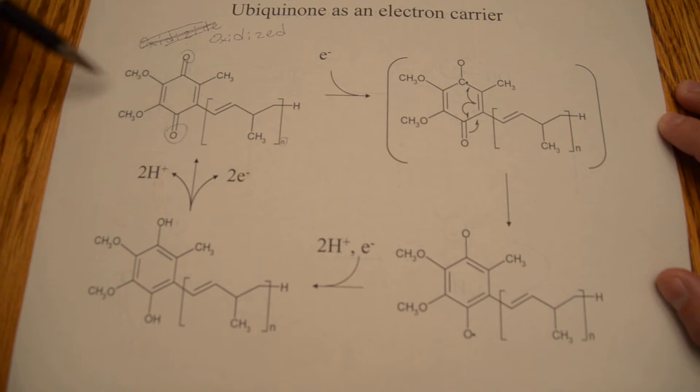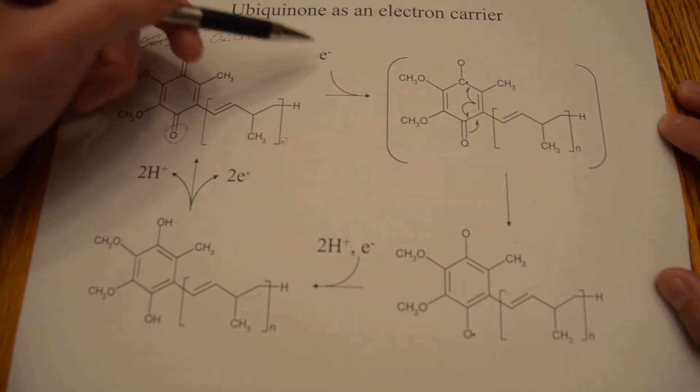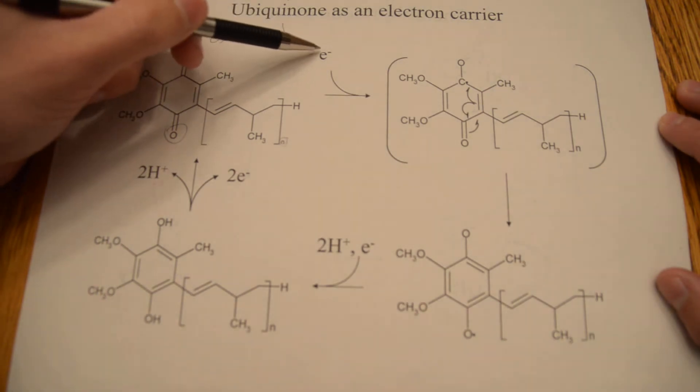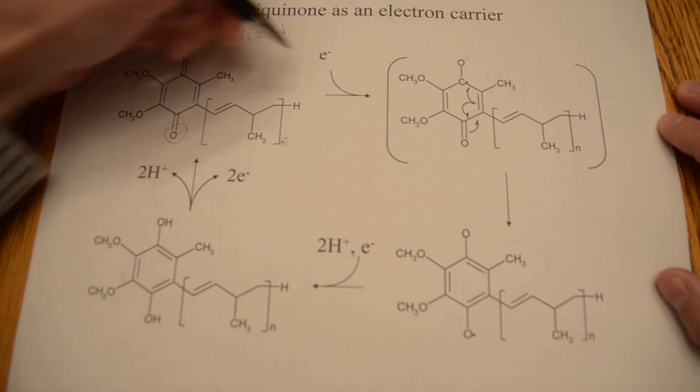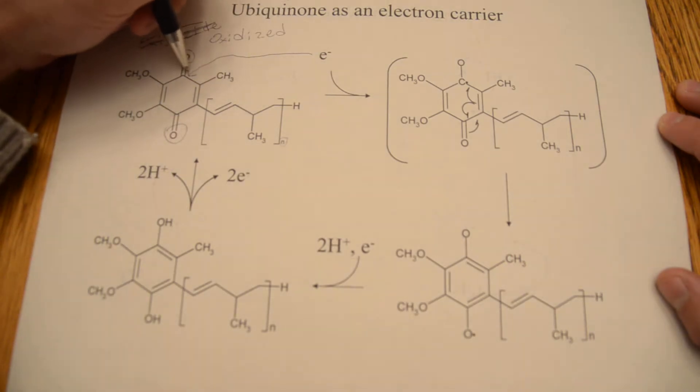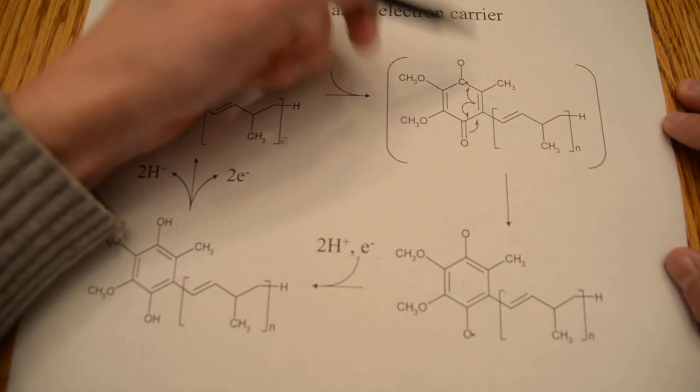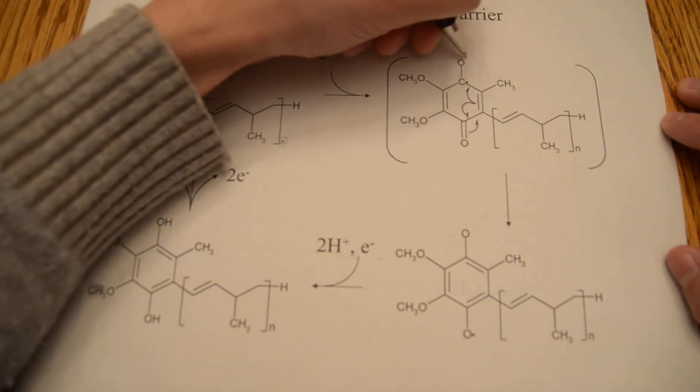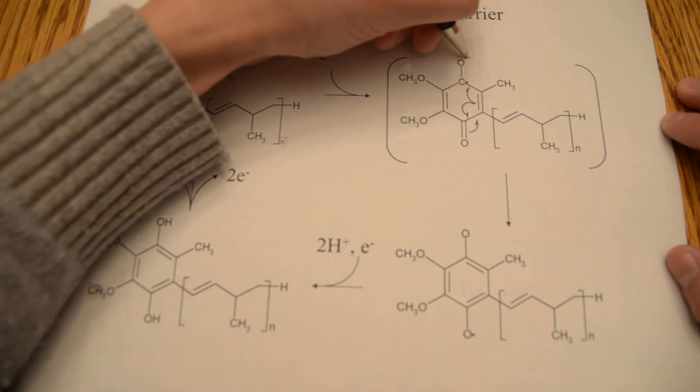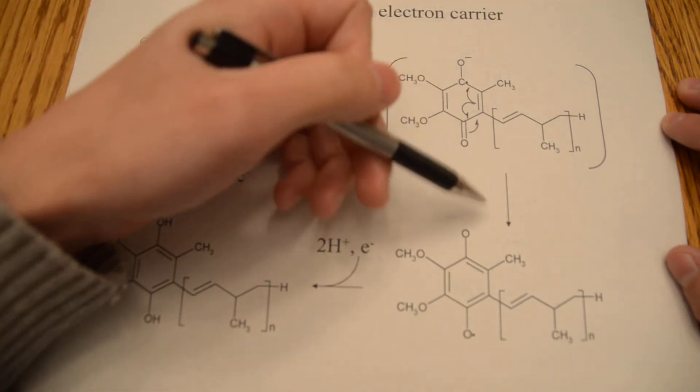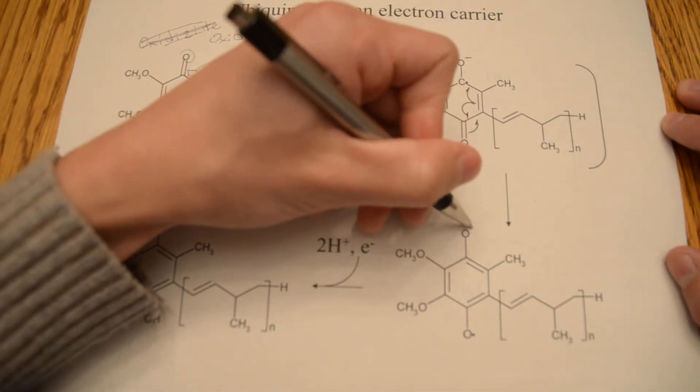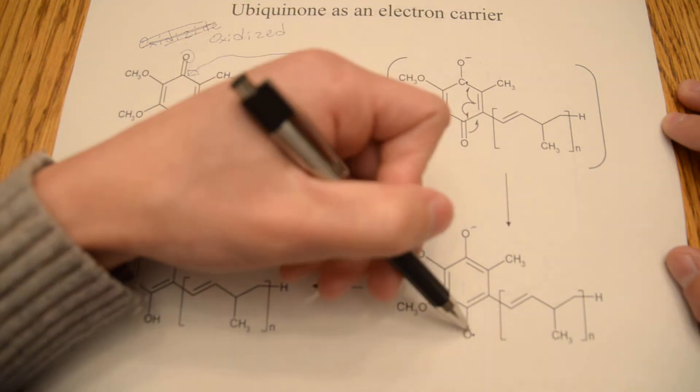So when it's in this state, it arrives at complex 1 or 2, and it will receive an electron one at a time. The first electron will attack here at this electrophilic carbon site, and then the electron will get passed. The negative charge will end up on this oxygen right here. And as you can see down here, there's a negative charge on this oxygen, and this oxygen has a radical.